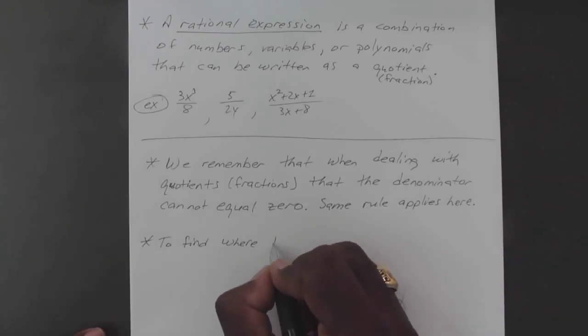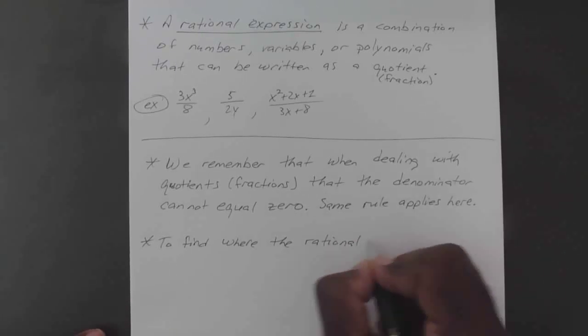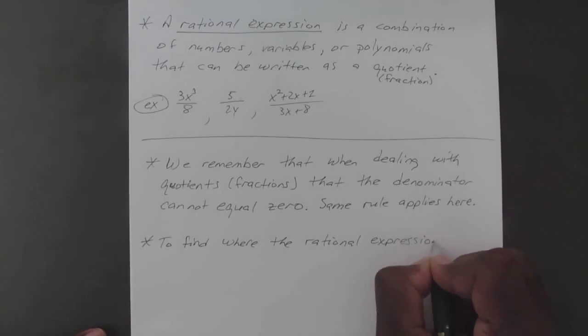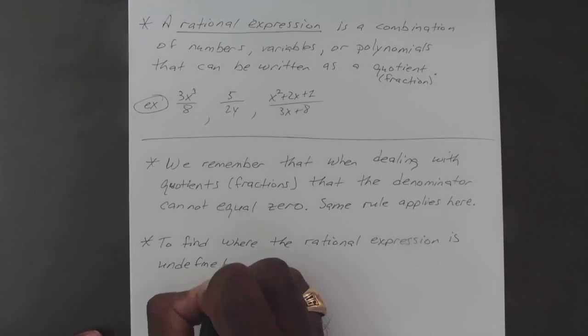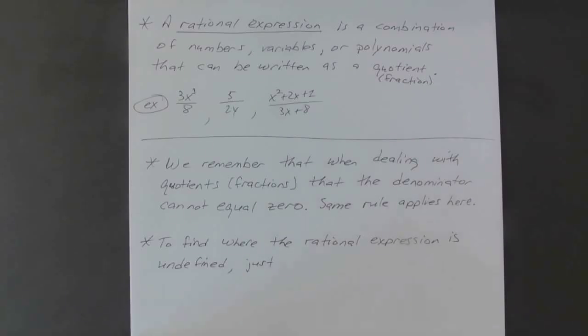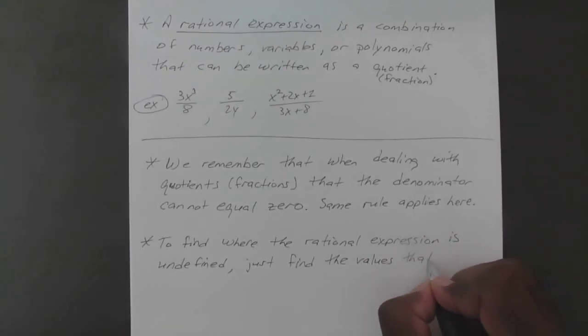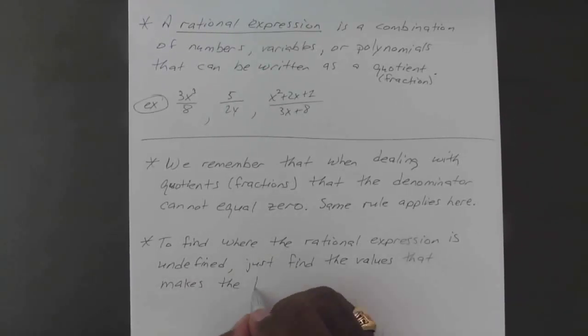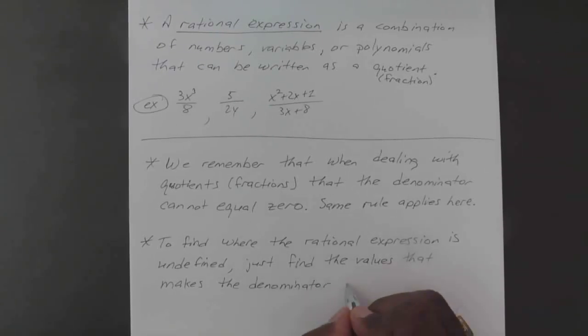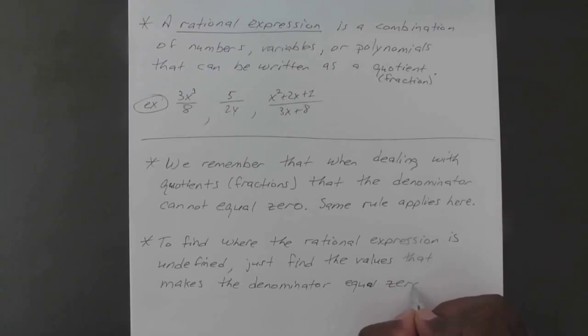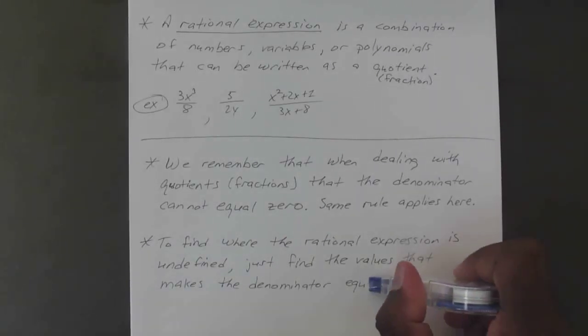To find where the rational expression is undefined, just find the values where the denominator equals zero. In some cases you will have to factor, in some cases you won't, and in some cases you won't have to do anything at all.